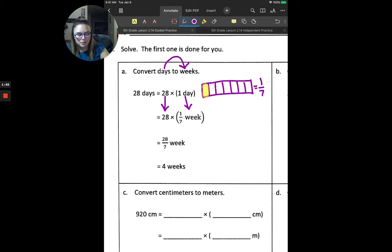And then we're going to multiply. So when we multiply this, one of the ways we can think about it is 28 over 1, because all of our whole numbers are a number over 1, which would also be 28 over 7. And so we multiply those together to get 28 over 7. We bring our week down. And then we can simplify, right? So if we divide 28 divided by 7, we get 4 weeks. So 28 days is equal to 4 weeks.